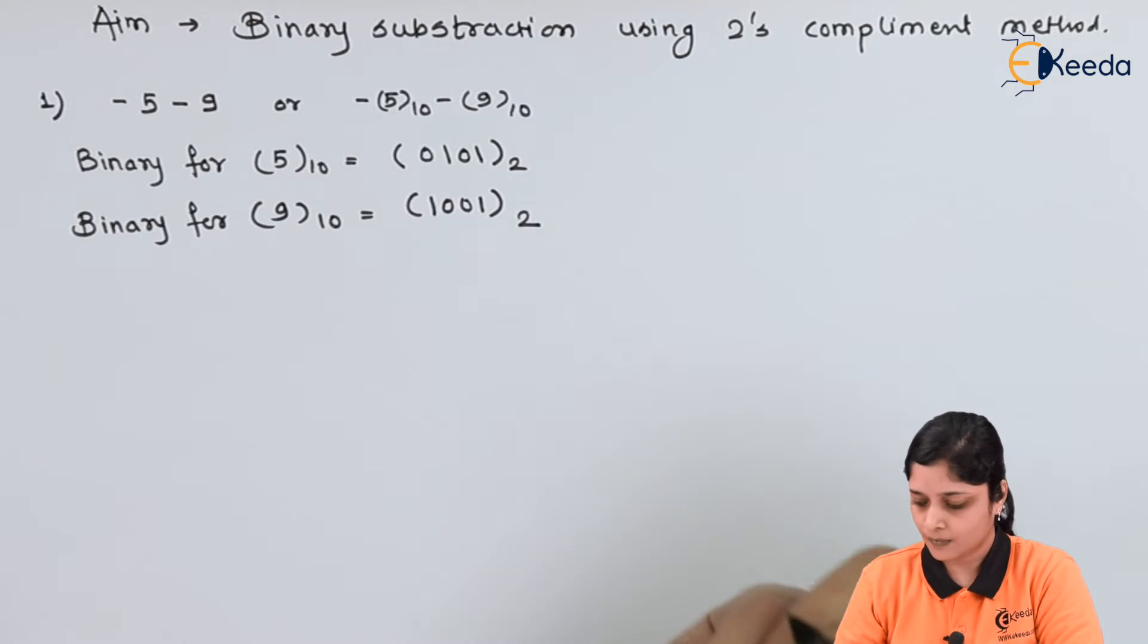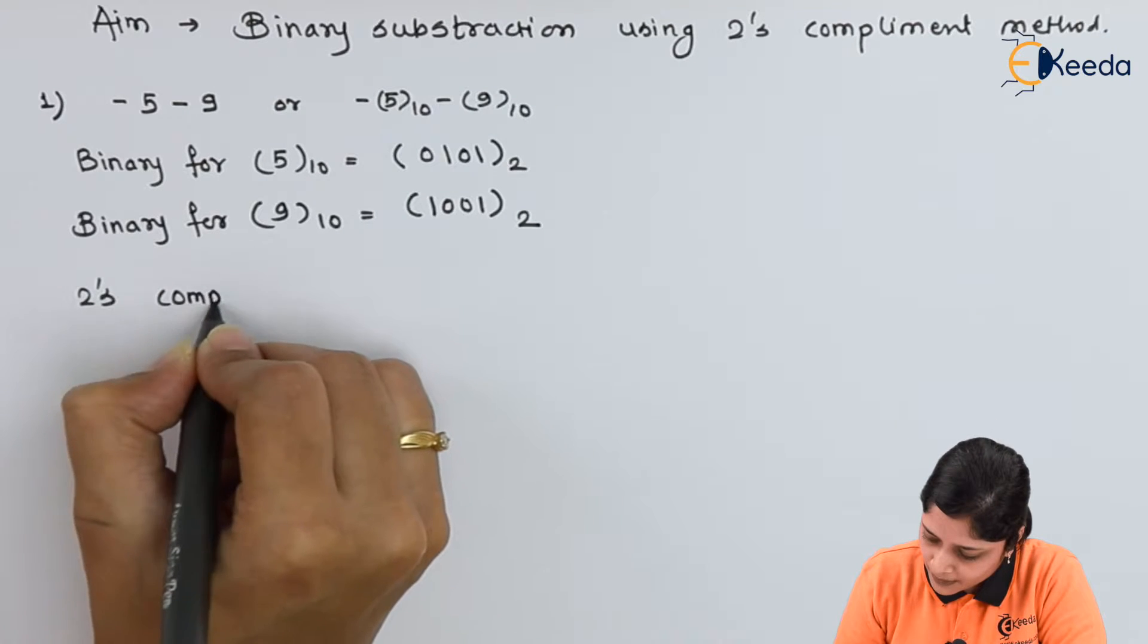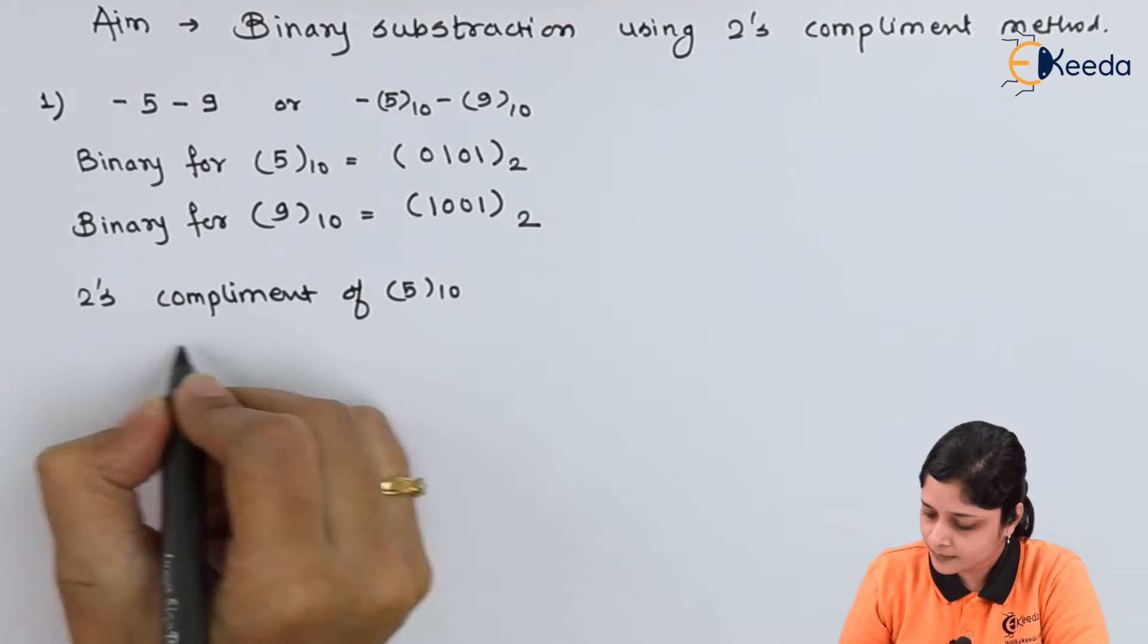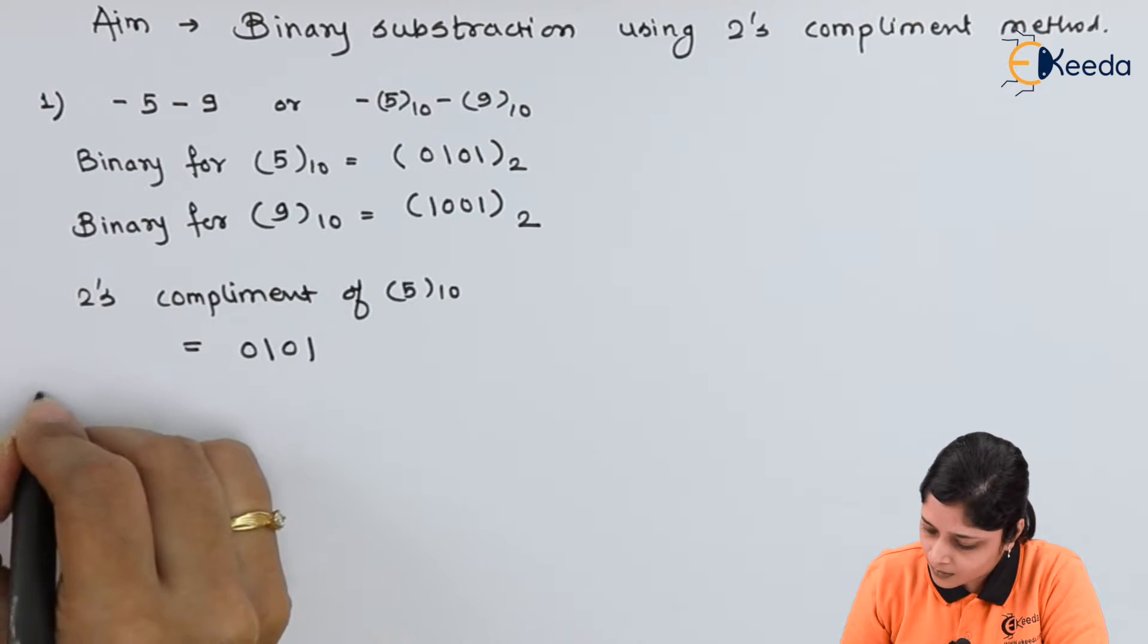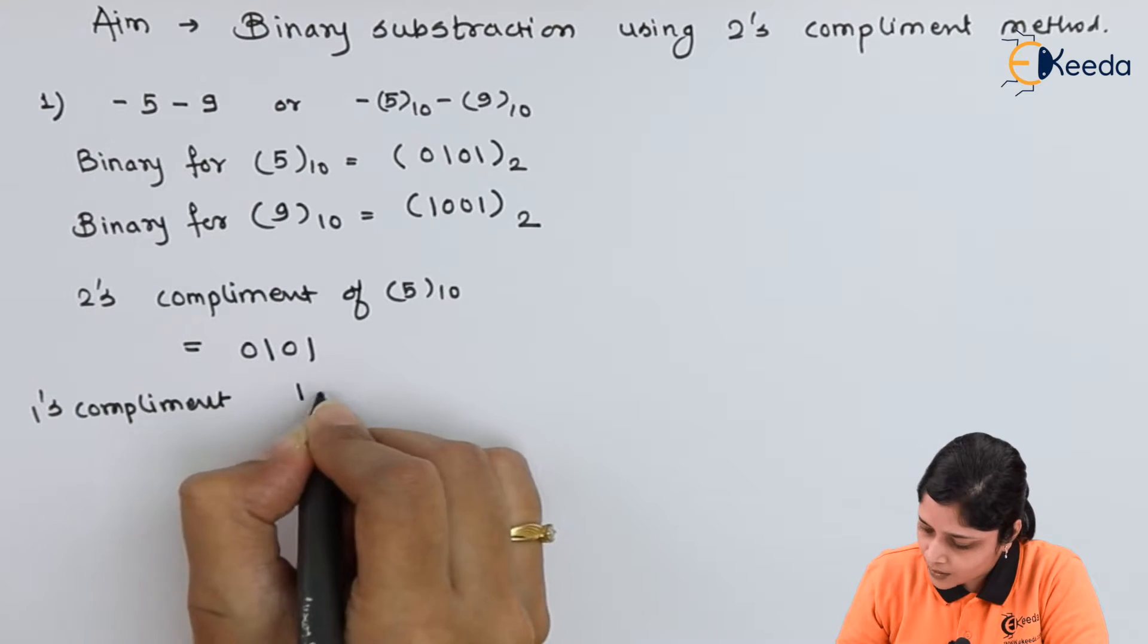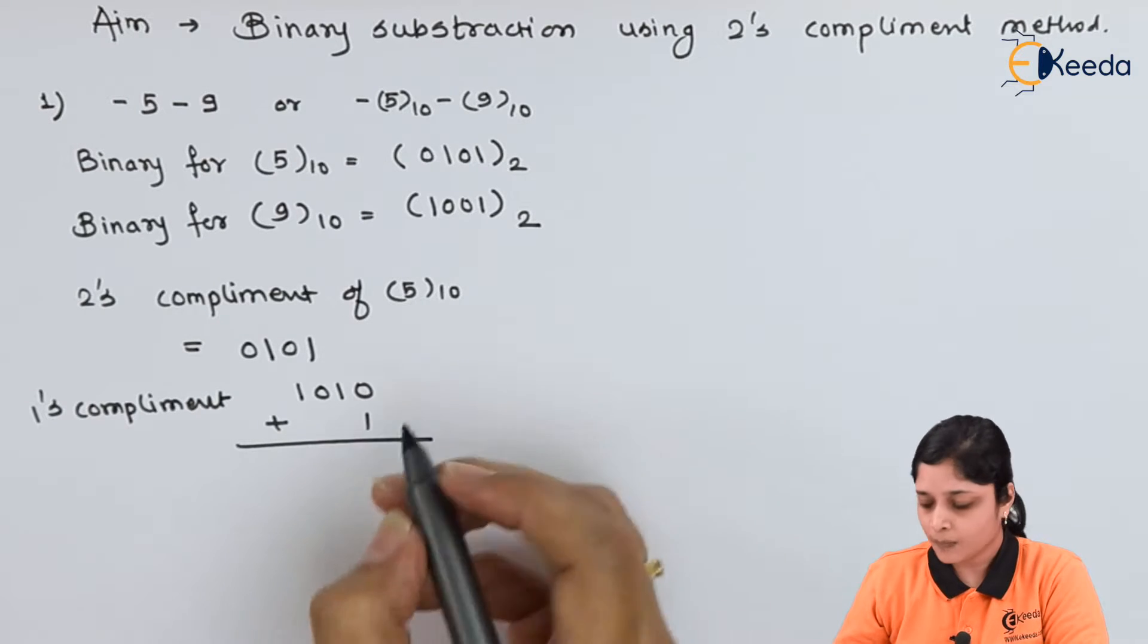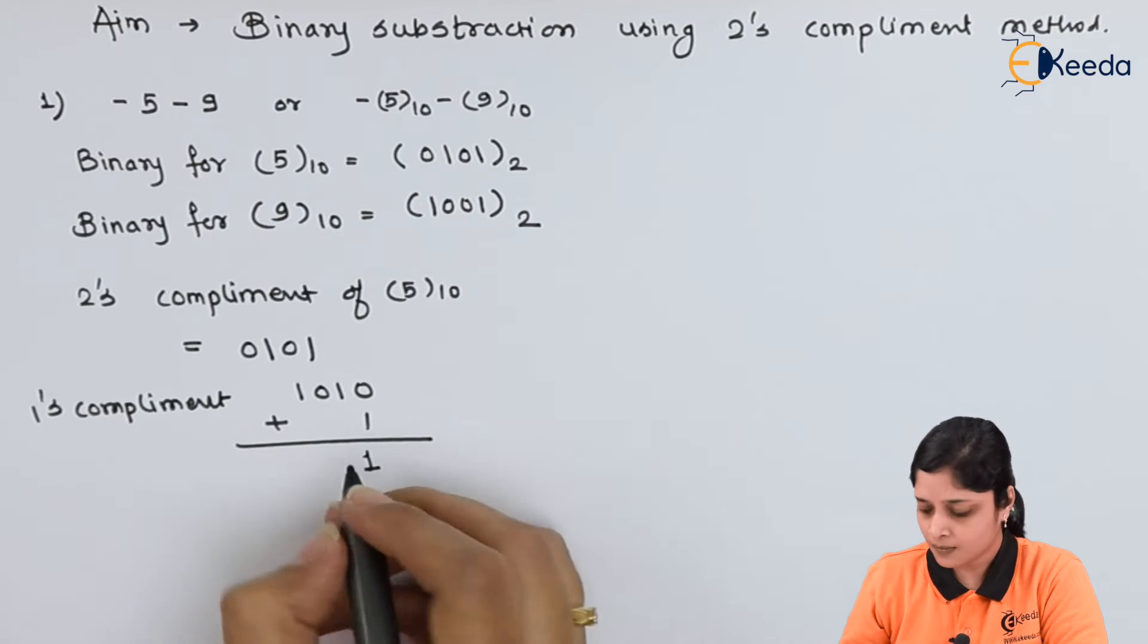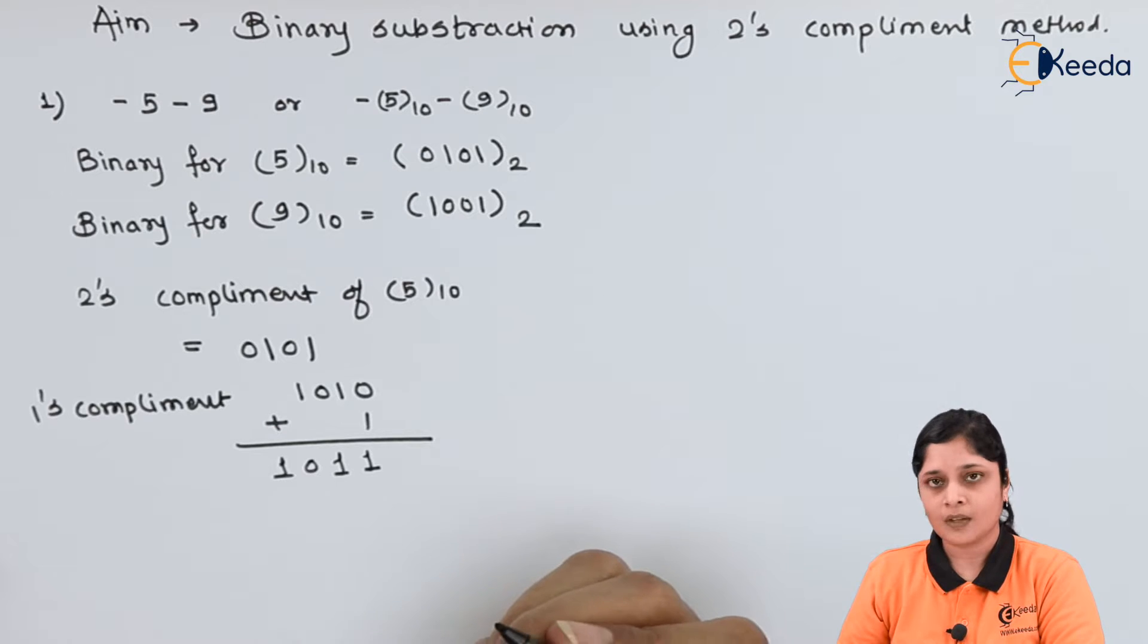2's complement of 5 is: 0101. First find 1's complement which is 1010, plus 1. Perform binary addition: 0 plus 1 is 1, giving you 1011.